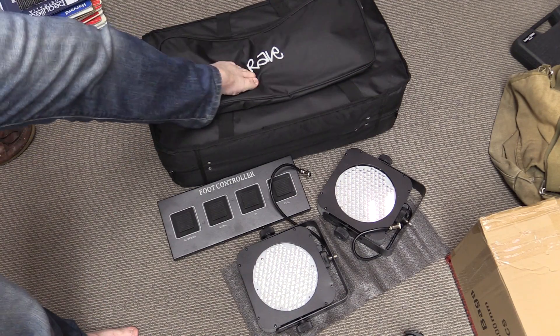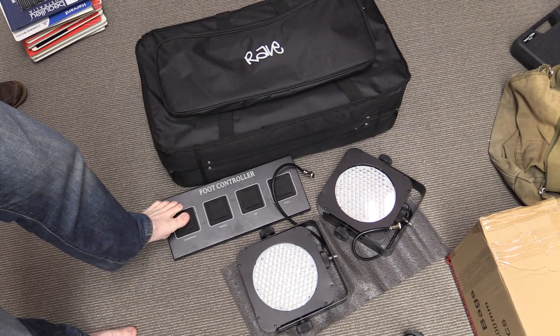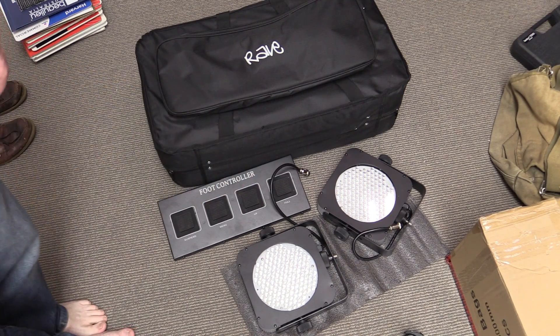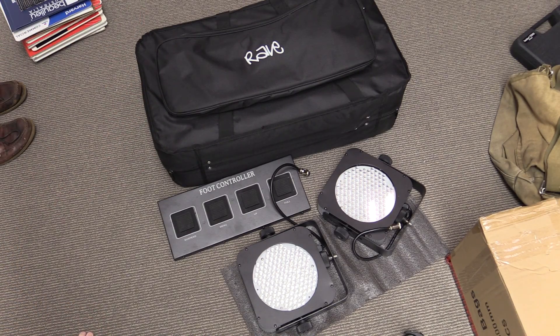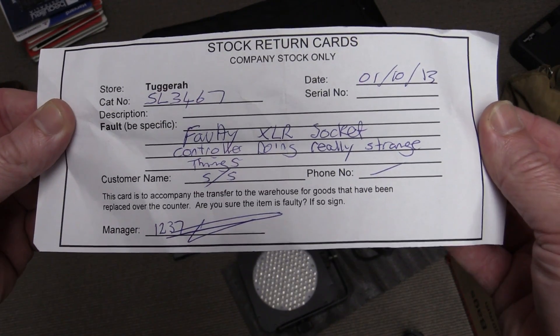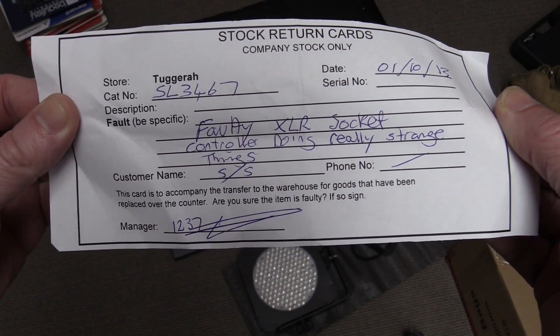Here's the big padded bag it came in with the Rave symbol, and it came with this foot controller as well. You can suspend it, you can call up the menu and you can go up and full. You've got four lights with it.